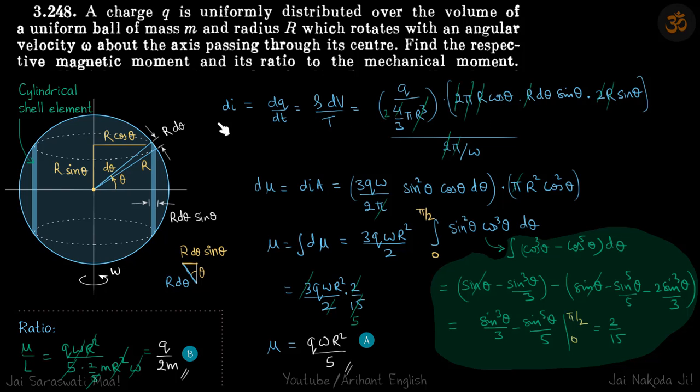So again, the current di on this cylindrical shell is charge on the cylindrical shell, which is rho dv divided by time period of one complete rotation. So rho is q by 4 by 3 pi r cube. So the volume dv is 2 pi into r cos theta circumference times r d theta sin theta into height 2r sin theta. So lot of these values will get cancelled out.